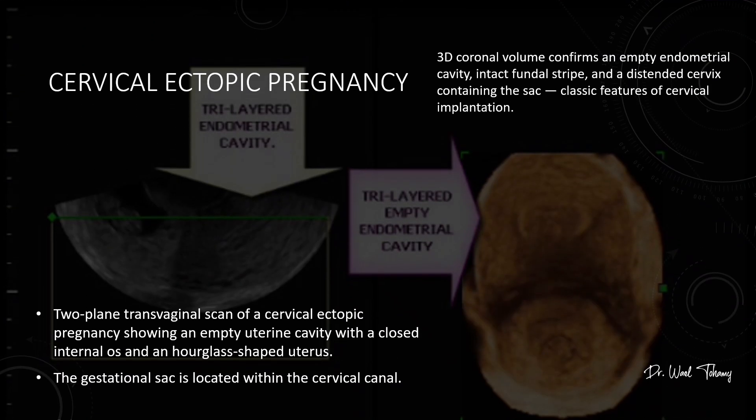Now let's look at a cervical ectopic pregnancy. On this two-plane transvaginal scan, you can see the uterine cavity is empty and the internal os is closed, giving the uterus that classic hourglass shape. A low-lying gestational sac is sitting right within the cervical canal. Recognizing this location early is critical because cervical ectopics carry a high risk of severe bleeding if not managed promptly.